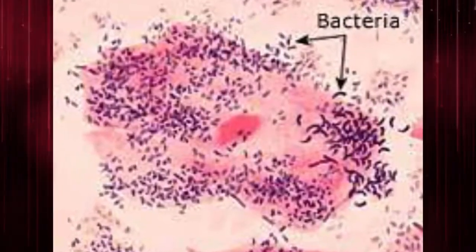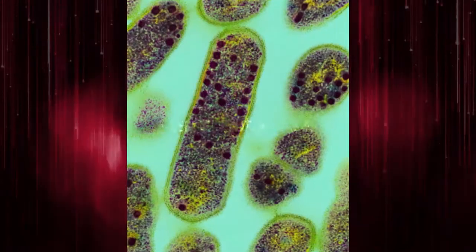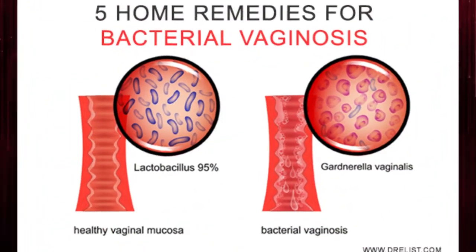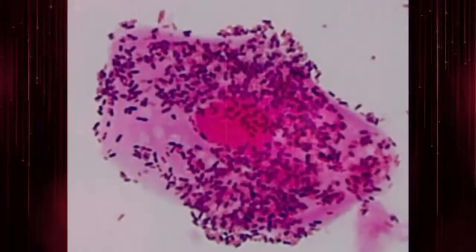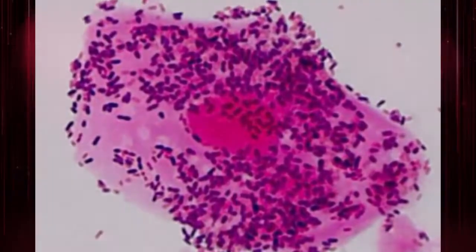Clue cells are vaginal squamous epithelial cells coated with the anaerobic gram-variable cocobacilli Gardnerella vaginalis and other anaerobic bacteria, causing bacterial vaginosis. These cells get their distinctive stippled appearance because they are covered with bacteria.